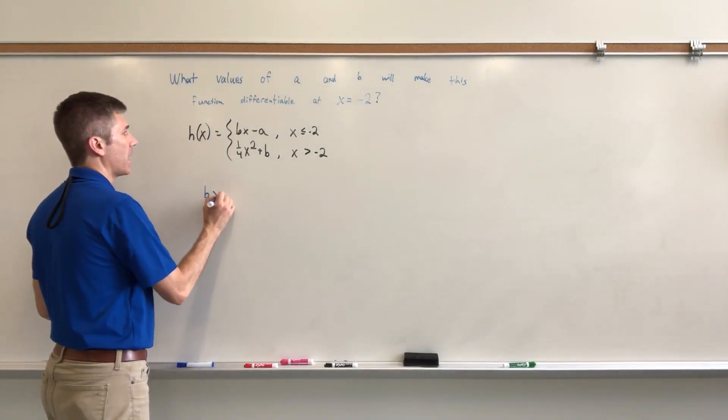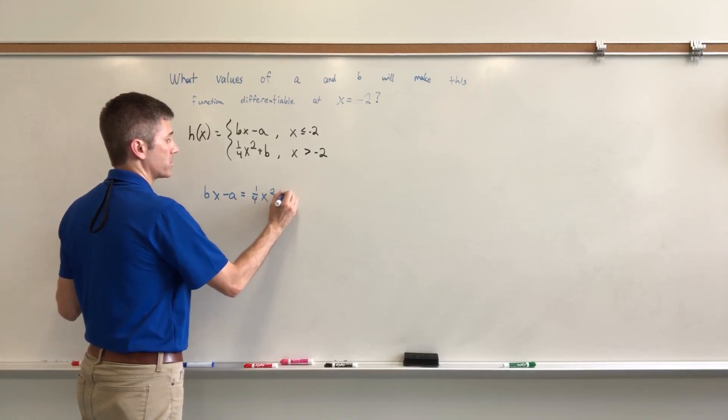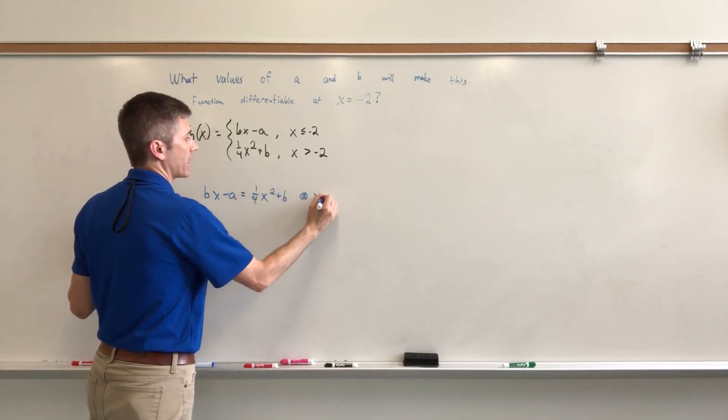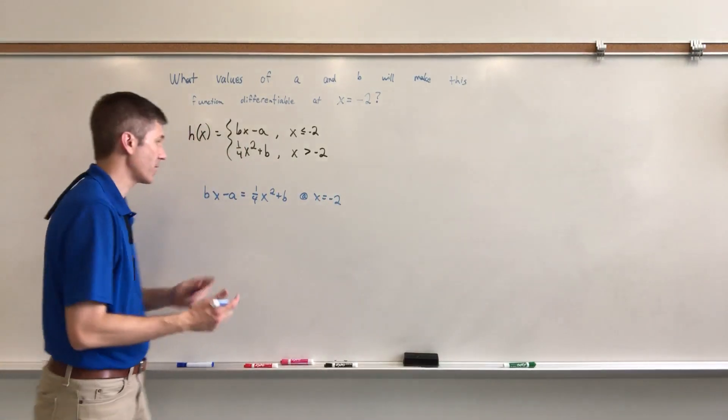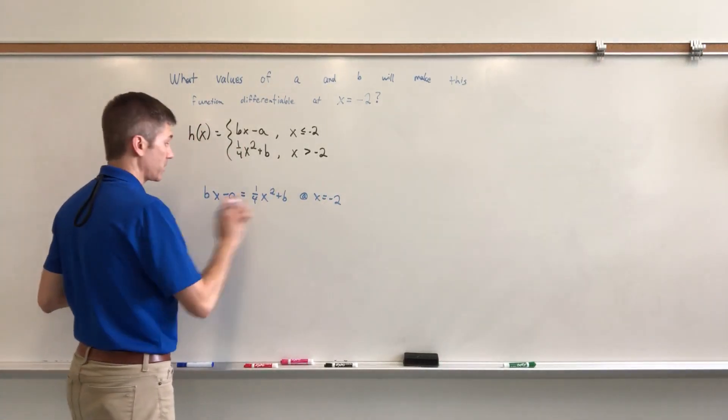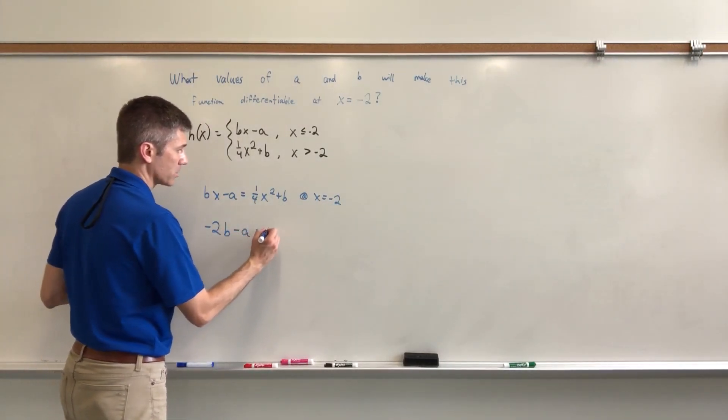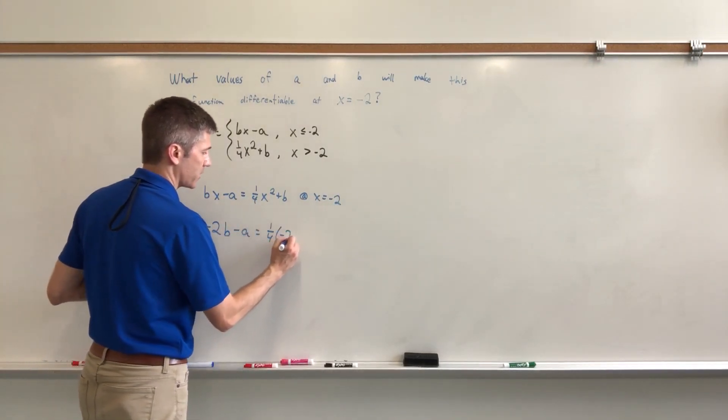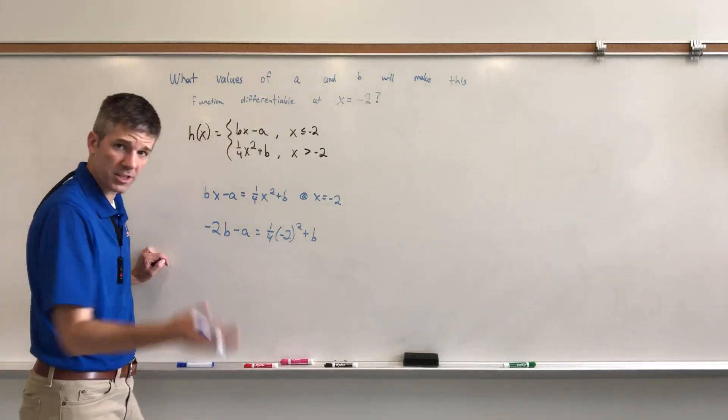I want this piece to equal this piece at x equals negative 2. I want Bx minus A to equal one-fourth x squared plus B at x equals negative 2. That way, the two function rules coincide at the same value. So I'm going to take negative 2 and plug it in. So I have negative 2B minus A equals one-fourth times negative 2 squared plus B.